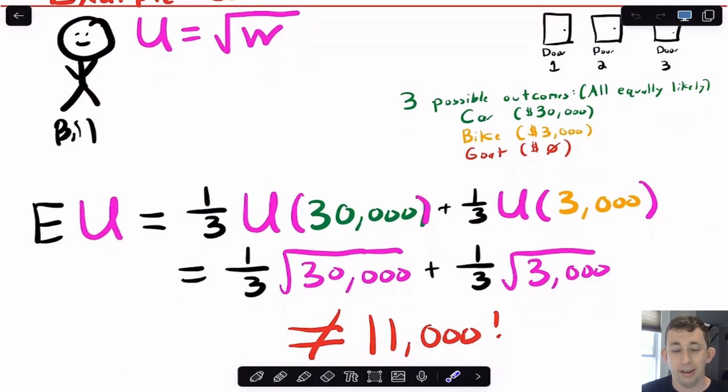One thing that I see a lot of people make mistakes on is when they get to expected utility, they're calculating expected value. You don't want to calculate expected value, you want to calculate expected utility.